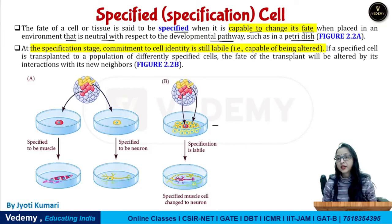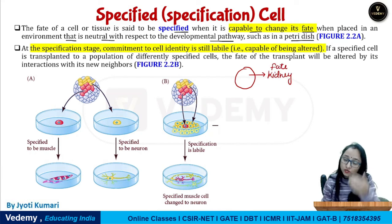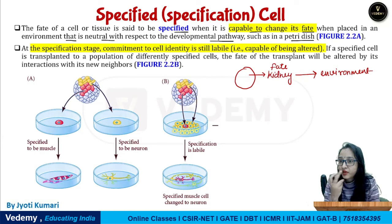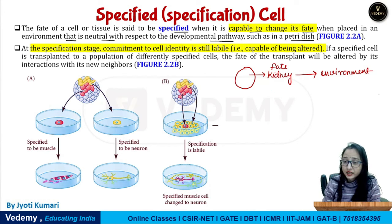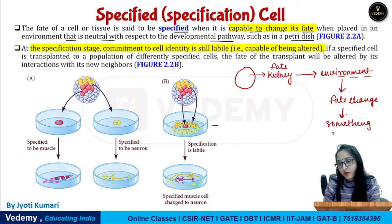When is a cell specified? When it keeps its fate. For example, a cell knows that it will become a kidney — its fate is decided. But in a different environment, that fate can change. If environmental influence changes its fate, it can become something else. That is what is called specification.